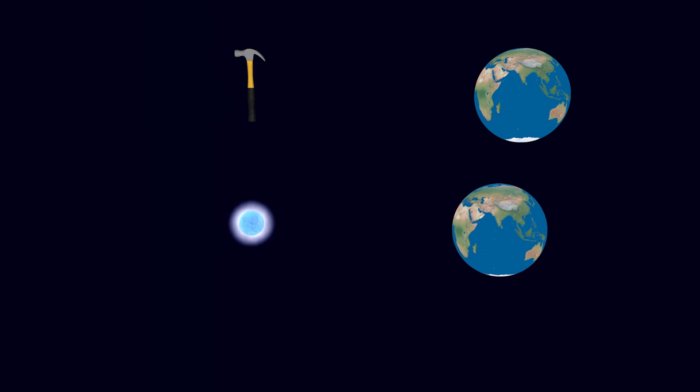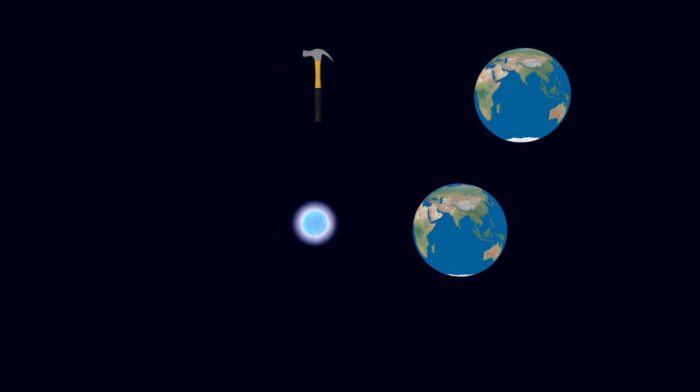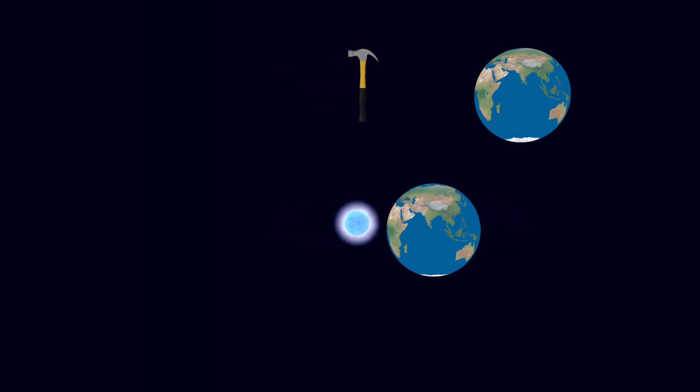So just to clarify, the bigger the mass, the more the earth will also fall into the falling object, causing a lower collision time.